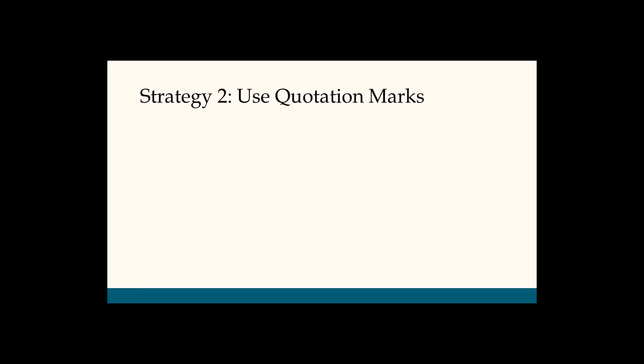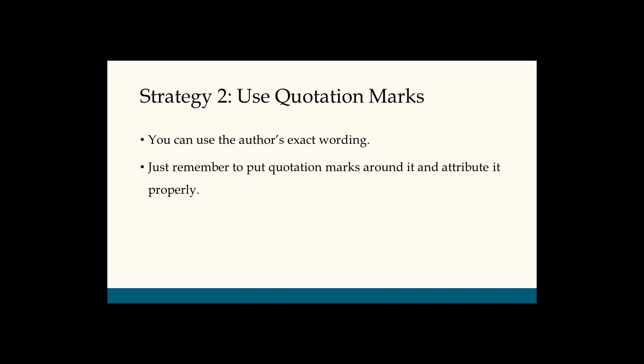Strategy two: use quotations. What's tempting about using the exact wording from the original source is that the author may have made the exact point you wanted to make, but you just couldn't find the right words to say it. And when they've already said it so well, making changes may just seem like a waste of energy. The good news is that it's okay to use the original author's exact wording, but only if you remember to put quotes around it and give proper credit. This shows you not only have good taste, but you also know how to give credit where it's due.